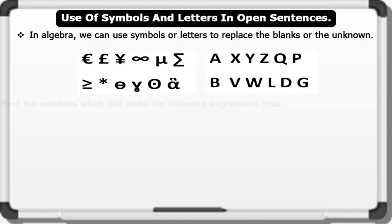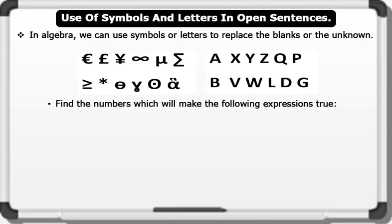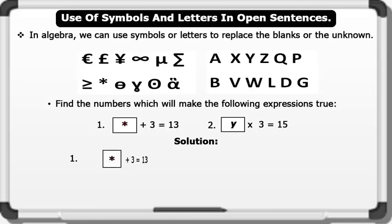Let's see an example. Find the numbers which will make the following expressions true. 1. Star symbol plus 3 equals 13. 2. Letter Y times 3 equals 15. Solution: The expression star plus 3 equals 13 will only be true if the value of star is 10. Therefore, 10 plus 3 gives us 13.